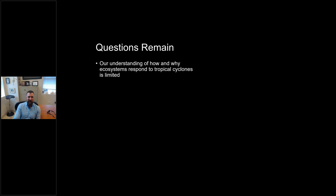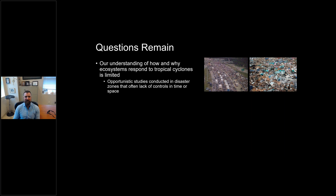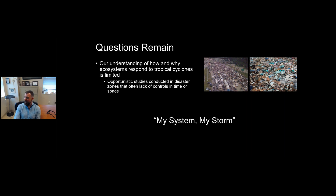We have many examples of storms and how they impact coastal systems, but our general understanding is still fairly limited. The reason is that most research is opportunistic — a disaster occurs, researchers weren't planning a hurricane study, then it happens with limited time to gather resources. They often end up with what we call a 'my system, my storm story' — documenting what happened in this particular storm in this particular place, but without context of all the different storms and everything going on. It's a one-off.